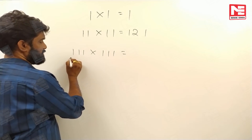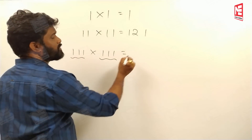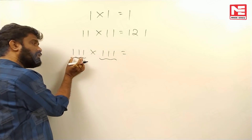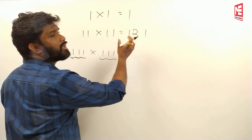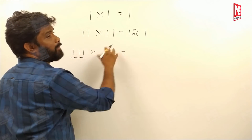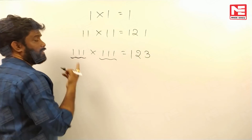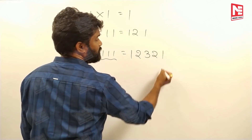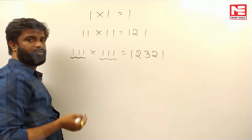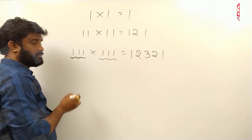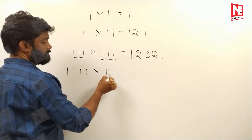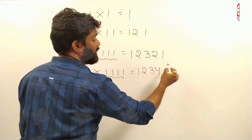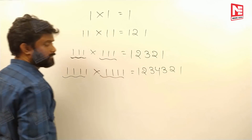For 111 into 111, there are 3 ones on each side. Start from 1 and write natural numbers in ascending order up to 3: 1, 2, 3 — then come back down in descending order: 2, 1. So the answer is 12321. For 1111 into 1111 with 4 ones, write 1, 2, 3, 4, 3, 2, 1 — giving 1234321.